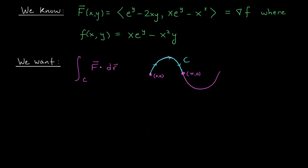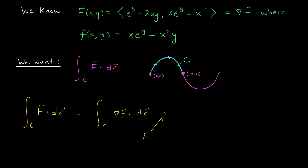Behold the power of the fundamental theorem. We're looking for the line integral of f along the curve y = sin(x) from (0,0) to (π, 0). We just found the potential function little f, so we use it: the line integral along c of F · dr equals the integral of ∇f · dr, which by the fundamental theorem is simply f at the terminal point f(π, 0) minus f at the initial point f(0, 0). You can check by plugging these points in that you get a final answer of π.